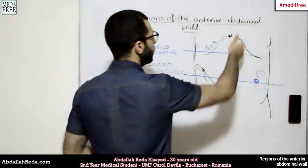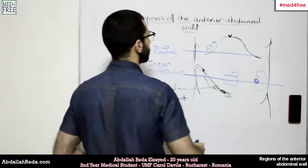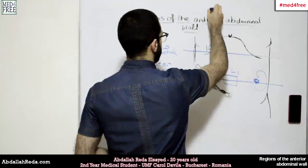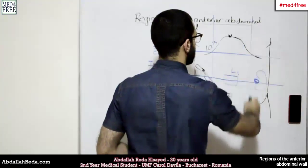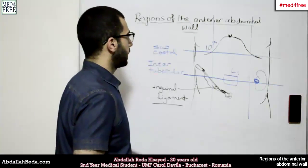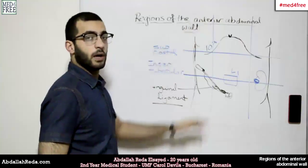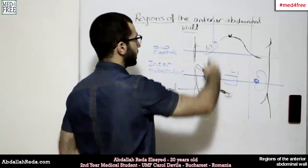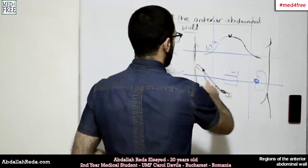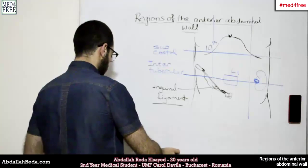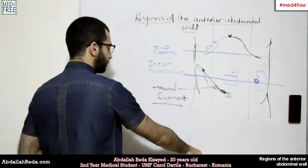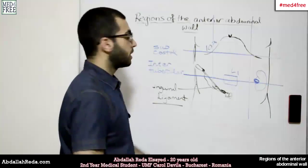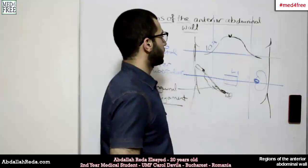Then we have two vertical lines, which are the midclavicular lines. They are called midclavicular because they start from the midpoint of the clavicle and go downwards. These four lines — two horizontal and two vertical — divide the anterior abdominal wall into nine squares, or nine regions.